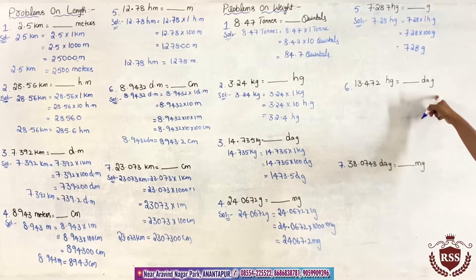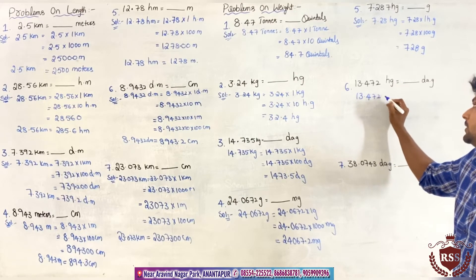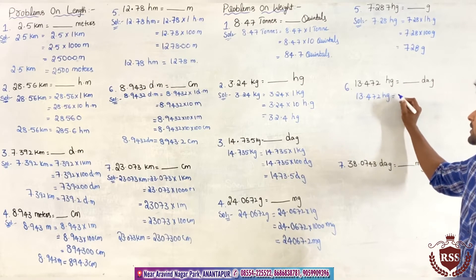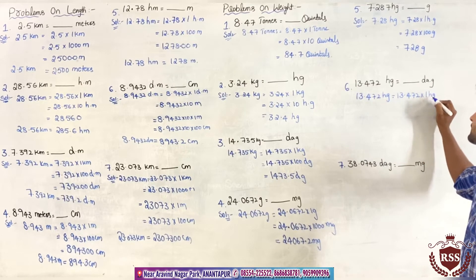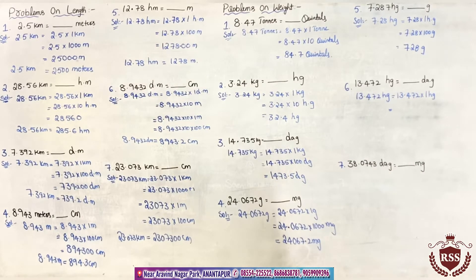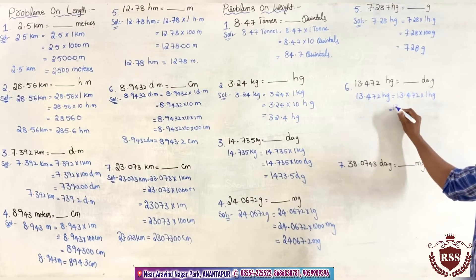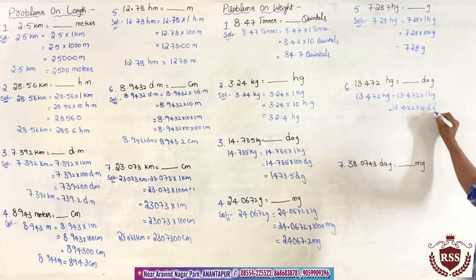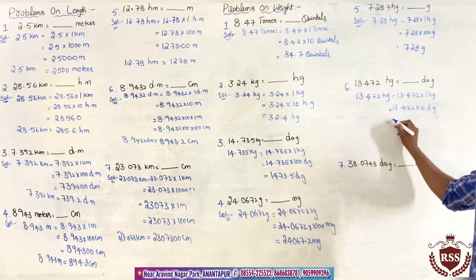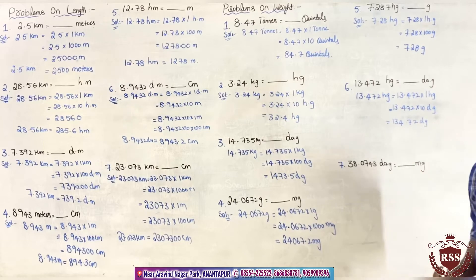Next: 13.472 hectograms will be written in terms of decagrams. 13.472 into 1 hectogram — 1 hectogram equals 10 decagrams. So 13.472 into 10 decagrams. If we multiply with 10, it will be 134.72 decagrams.